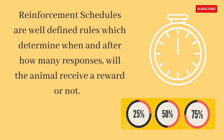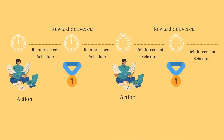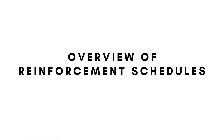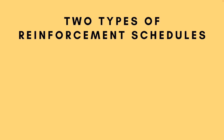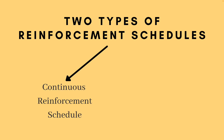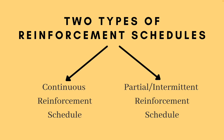For instance, the occurrence of the action of studying for an exam and the occurrence of the reward — which in this case can be scoring first place in the class — occurs at a defined time gap. This time gap can be referred to as the reinforcement schedule. There are two fundamental types: the continuous reinforcement schedule and the partial or intermittent reinforcement schedule.